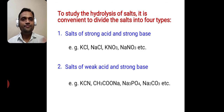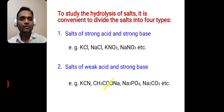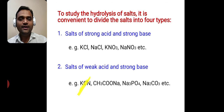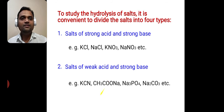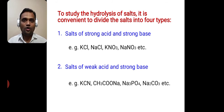The second type is salts of weak acid and strong base. For example, potassium cyanide, sodium acetate, sodium phosphate, sodium carbonate, etc. Potassium cyanide is made up from potassium hydroxide (a strong base) and hydrogen cyanide (a weak acid). Sodium acetate is made up from acetic acid (a weak acid) and NaOH (a strong base). So these are salts of weak acid and strong base.